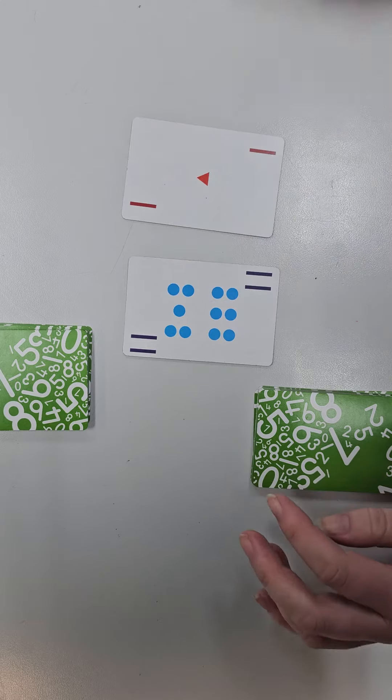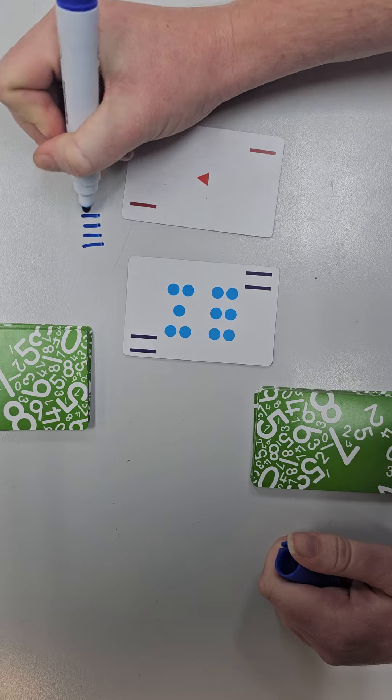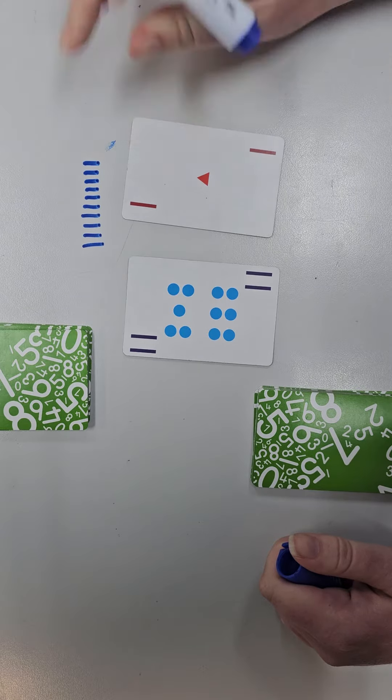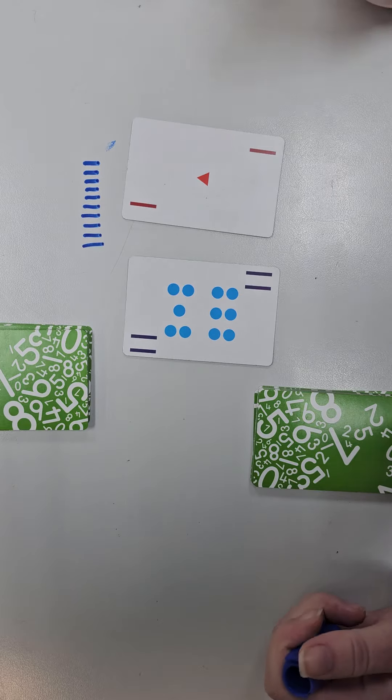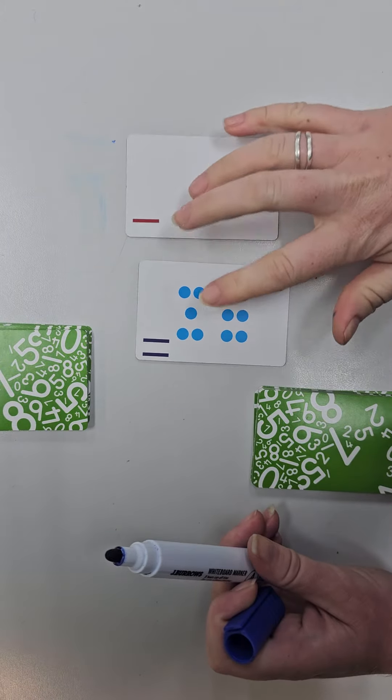They might use a whiteboard drawing eleven dots, three through eleven, and then rubbing one off, or they might use a strategy like counters. So this person's answer is ten.